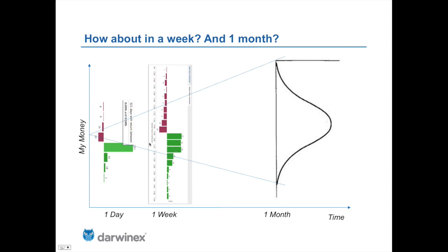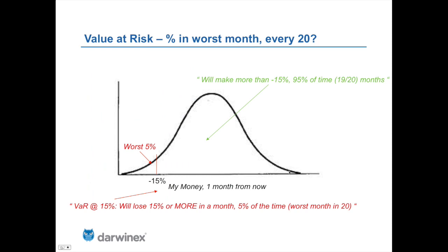As you see, the uncertainty gets bigger as we go further in time, which is why we have a bigger uncertainty at one month. At DarwinX this is done by taking historical data and simulating thousands of possible returns matching the risk and style of the strategy — through what people call Monte Carlo. This brings us to the measure of risk at DarwinX: Value at Risk, defined as the percentage of loss in the worst month every 20.